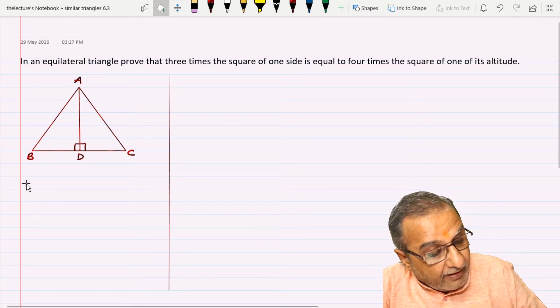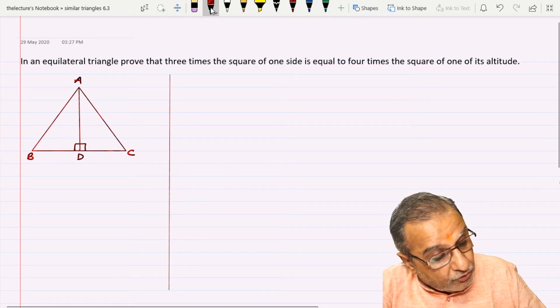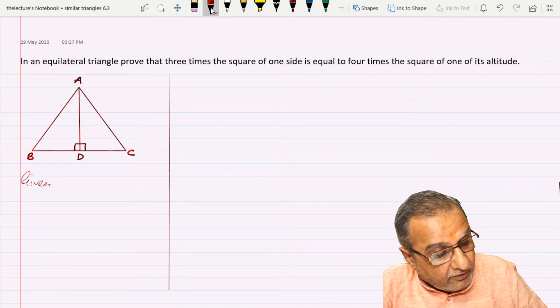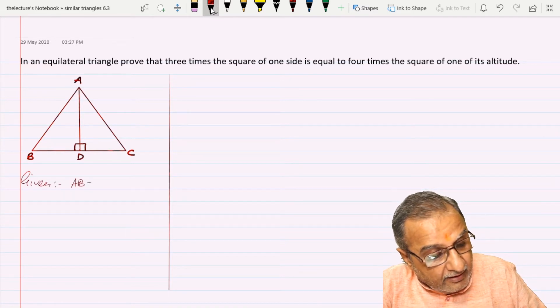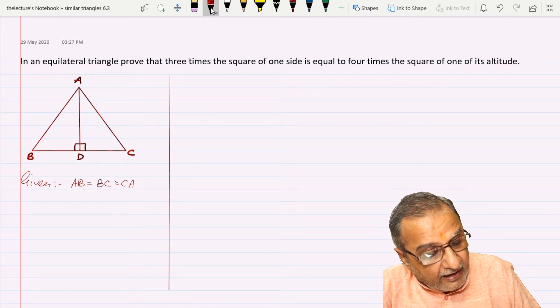The given part is that the triangle is equilateral. So AB equals BC equals CA, and all these sides equal A.